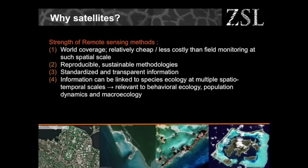Why satellites? There are a lot of reasons why it's a cool tool for any ecologist. First, it provides world coverage. It's substantially cheaper than having people going around with binoculars or any method to get the same information at the same temporal and spatial resolution and extent. It's reproducible, sustainable, and checkable — you can download the data, redo the analysis, and see whether it holds. It's transparent and standardised. And there's more and more evidence that you can directly link it to the ecology of species, making it relevant to behavioural ecology, population dynamics, macroecology, and movement ecology.